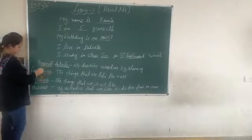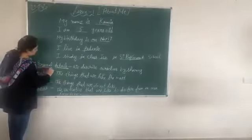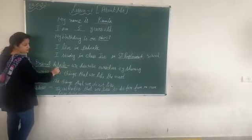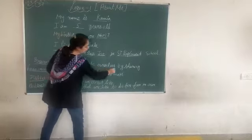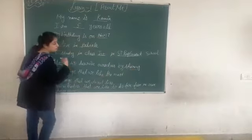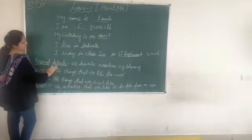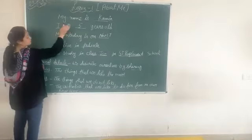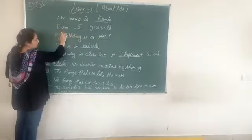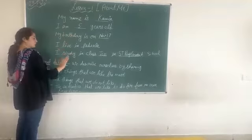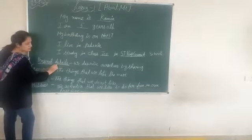Now in this lesson there are 4 definitions. The first one is personal details. What are personal details? We describe ourselves by sharing information with each other — this is called personal details. For example, when you say your name, your age, your birthday, your living place — this all comes under personal details.